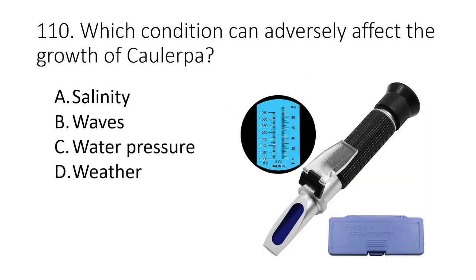Question 110. Which condition can adversely affect the growth of Caulerpa? A. Salinity B. Waves C. Water pressure D. Weather. The answer is A. Salinity.